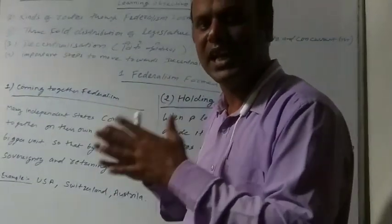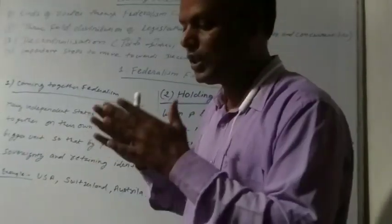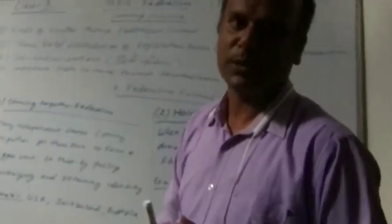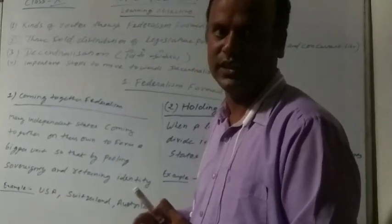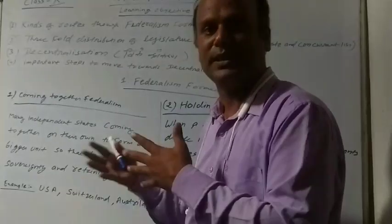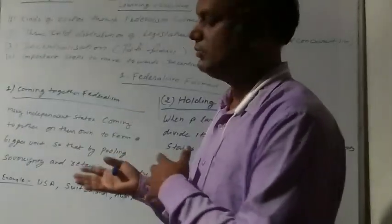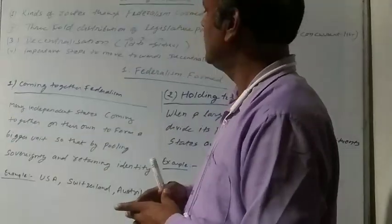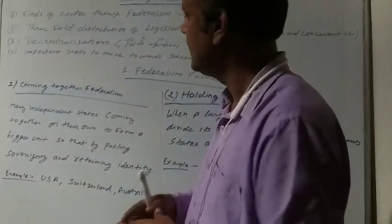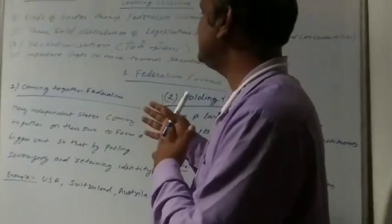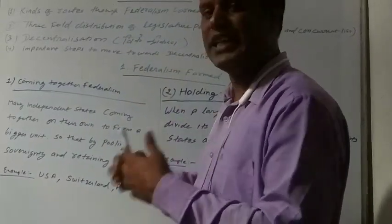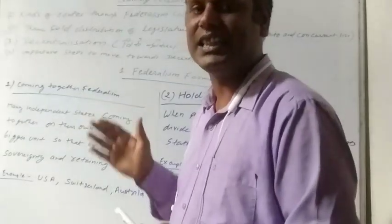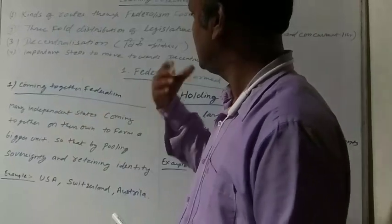The idea behind decentralization is to resolve local issues at the local level. Some important steps taken by the Indian government include: the regular conducting of elections in Panchayati systems as well as municipal corporations. The state government regularly conducts elections, a few seats are reserved for SCs and STs in local government, and especially one-third of seats are reserved for women. These are key points showing how India has moved towards decentralization. In India, decentralization began after 1992 with the formation of the third level of government — such as the Panchayati Raja system and municipal corporations.